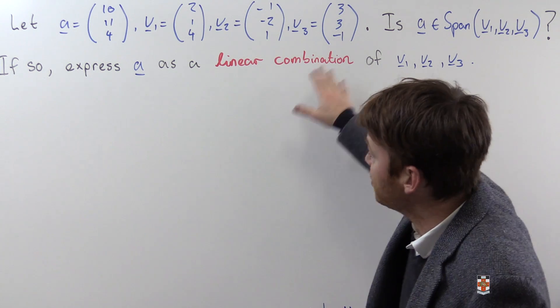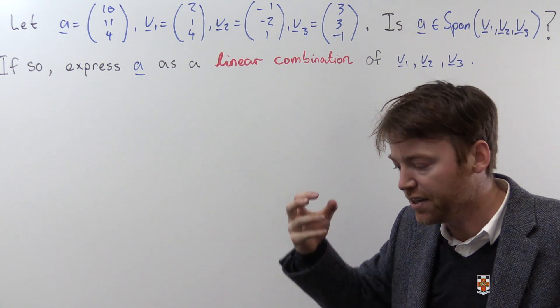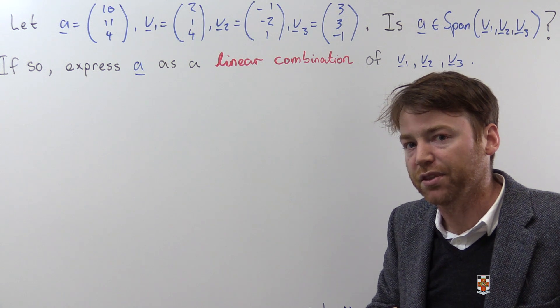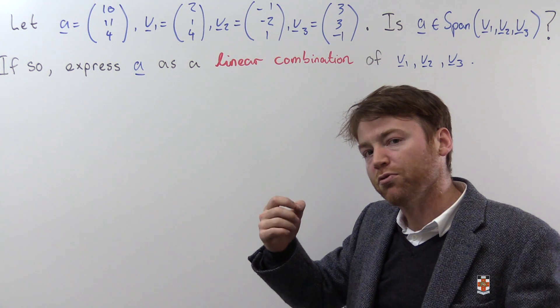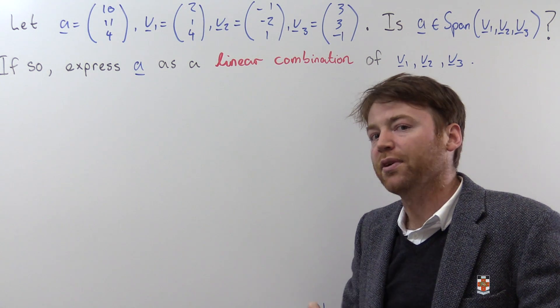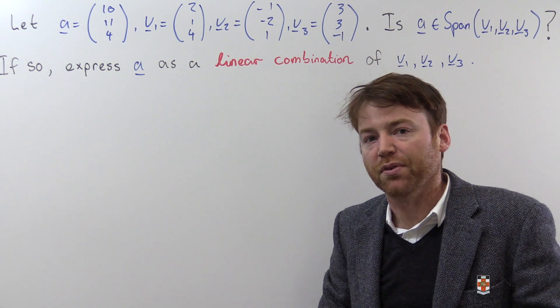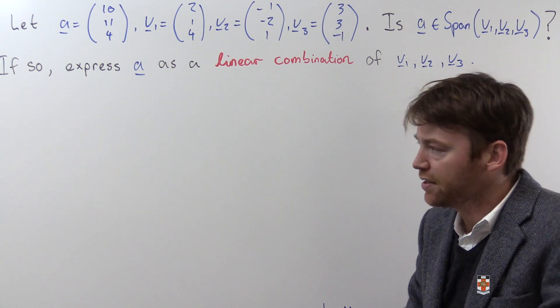To do this we're going to use an augmented matrix. To answer the first question we're going to get it into row echelon form which will tell us if it is expressible as a linear combination of v1, v2 and v3. Then we will have to go to reduced row echelon form to actually find that expression of a in terms of v1, v2 and v3. Let's get started.